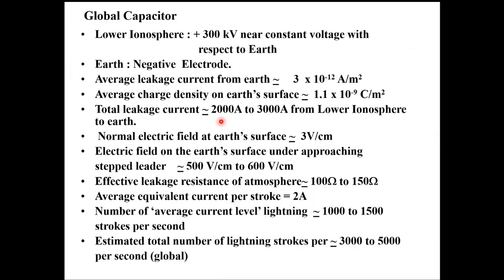If you take a metal sheet of 4 metres by 4 metres, mount it in your backyard and ground it through a picoammeter, you can measure some 50 to 60 picoamperes. This shows there is an average leakage current from the lower ionosphere to the ground.